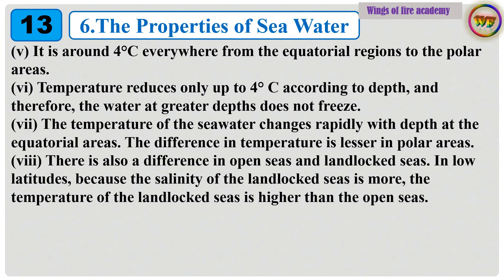It is around 4 degrees Celsius everywhere from the equatorial regions to the polar areas. Temperature reduces only up to 4 degrees Celsius according to depth, and therefore the water at greater depths does not freeze. The temperature of the seawater changes rapidly with depth at the equatorial areas. The difference in temperature is lesser in polar areas. There is also a difference in open seas and landlocked seas. In low latitudes, because the salinity of the landlocked seas is more, the temperature of the landlocked seas is higher than the open seas.